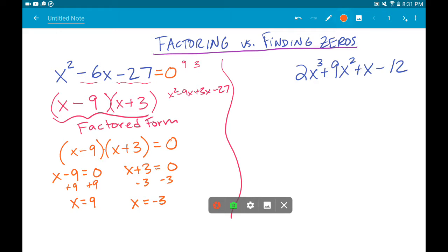If you're asked to find the zeros, the zeros for this example would be nine and negative three.